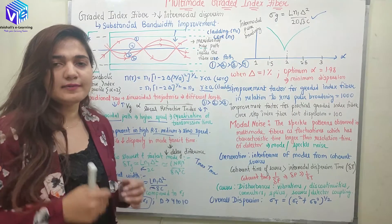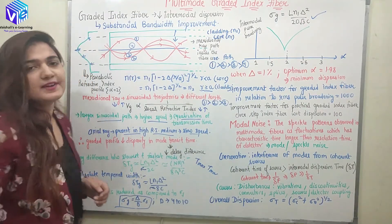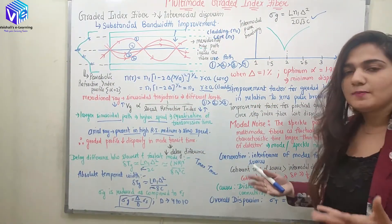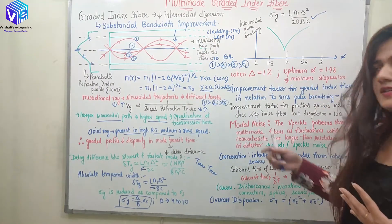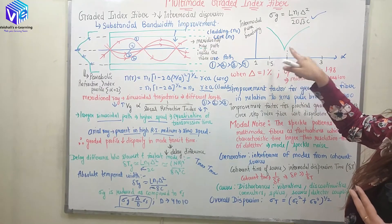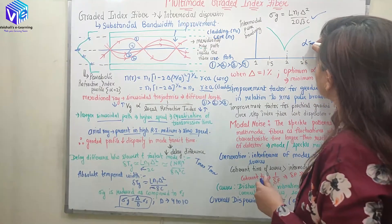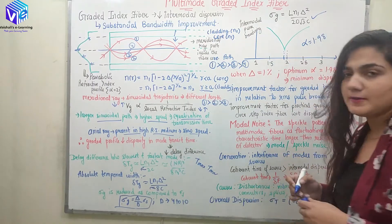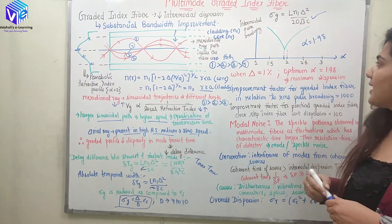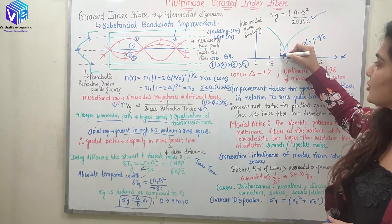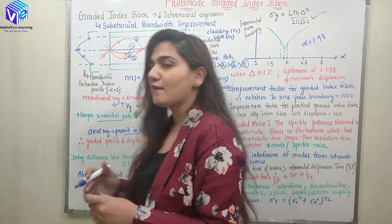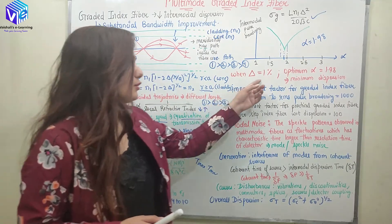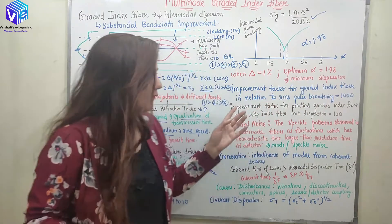Now to the big question: why is the optimal profile at alpha equal to 2? When I plot intermodal pulse broadening (dispersion losses) versus alpha, the optimal condition is achieved at alpha = 1.98. Shifting away from 1.98 gives a very reduced performance. So instead of exactly 2, I can precisely say I need to work with alpha = 1.98. When the relative refractive index is 1%, the optimum alpha is 1.98, giving minimum dispersion.